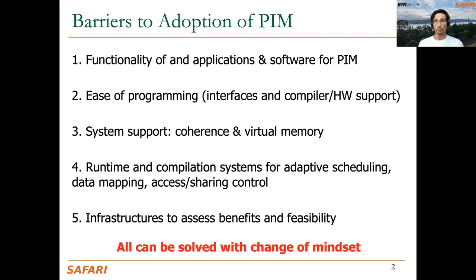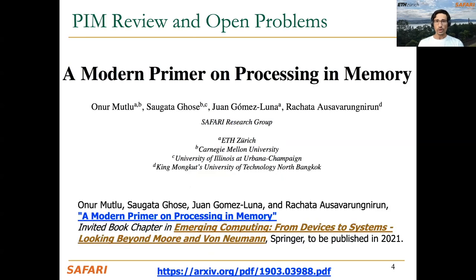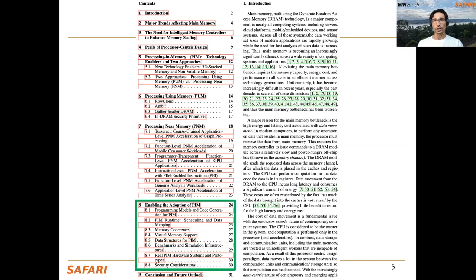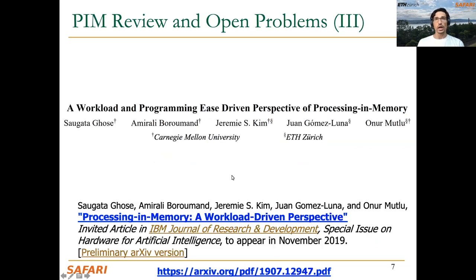All these barriers can be solved with a change of mindset that should span almost the entire stack from the algorithm to the devices. These challenges and barriers, along with the different research directions to solve them, are covered in our book chapter 'A Modern Primer on Processing in Memory,' available on arXiv. The table of contents includes section 8 on enabling the adoption of PIM. This is also covered in shorter versions published at MICRO 2019 and in the IBM Journal of Research and Development.